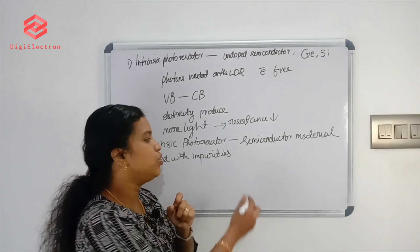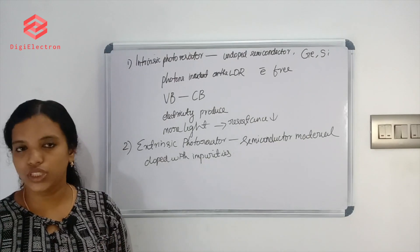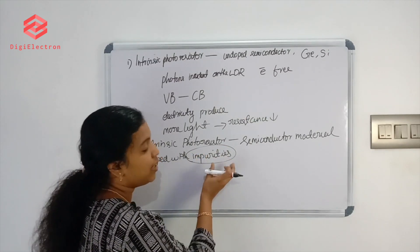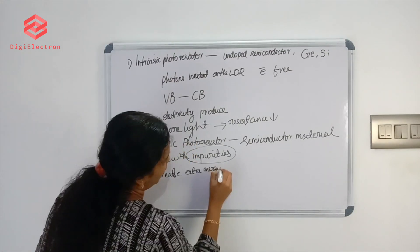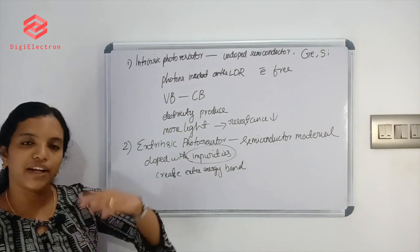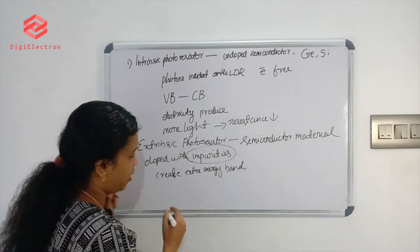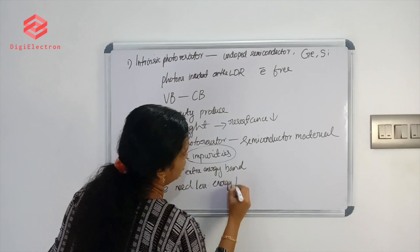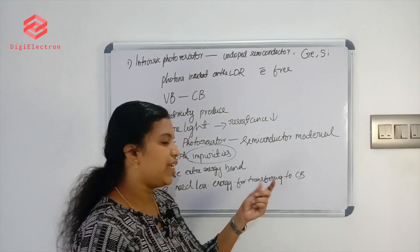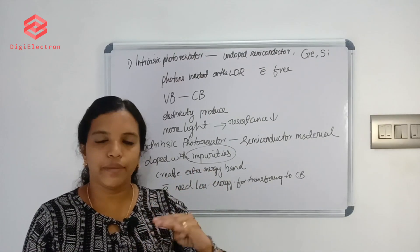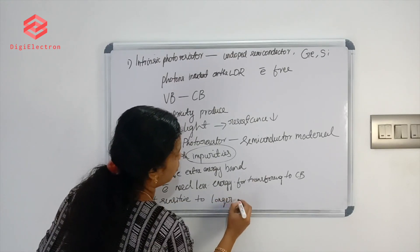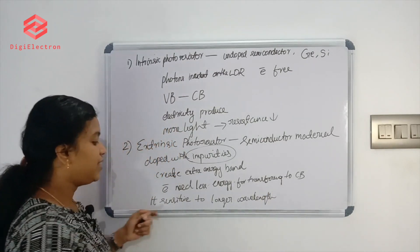The second type uses impurities — Extrinsic Photoresistors. When impurities are added as dopants, an extra energy band is created between the valence band and conduction band. Electrons need less energy to transfer to the conduction band, making the device sensitive to longer wavelengths.